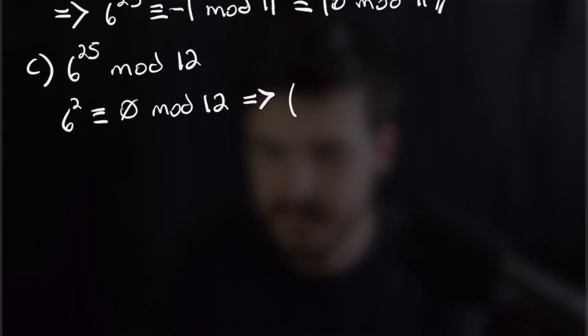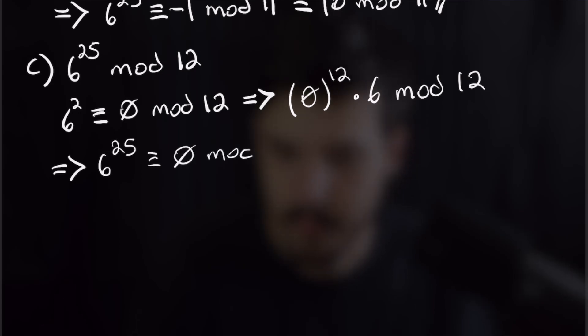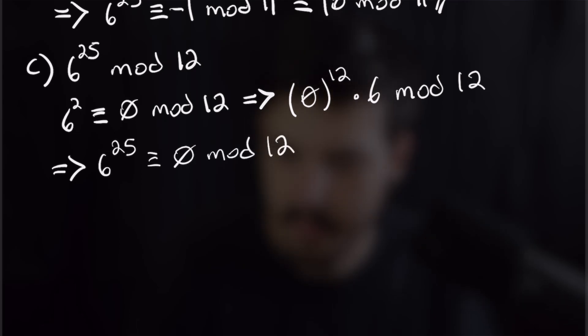Part c is actually really easy: we have 6 to the 25th reduced mod 12. Since 6 squared is 36, which is 0 mod 12, we can rewrite 6 to the 25th as 0 to the 12th times 6. Anything times 0 gives 0, so the answer is 0 mod 12.